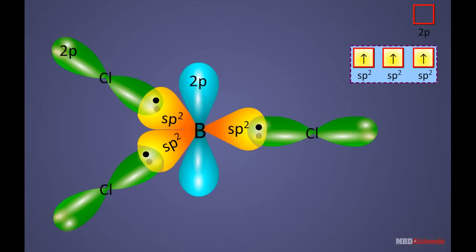Thus, BCl3 has trigonal planar geometry and the Cl-B-Cl bond angle is 120 degrees.